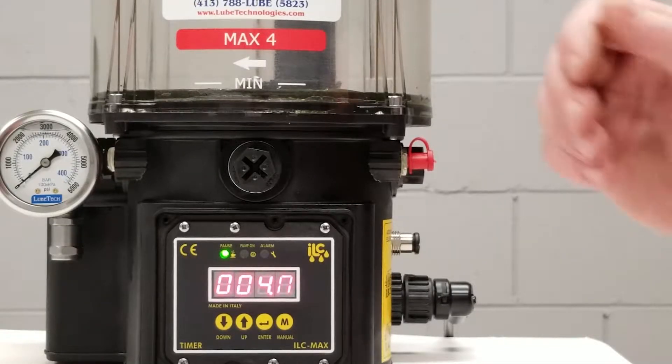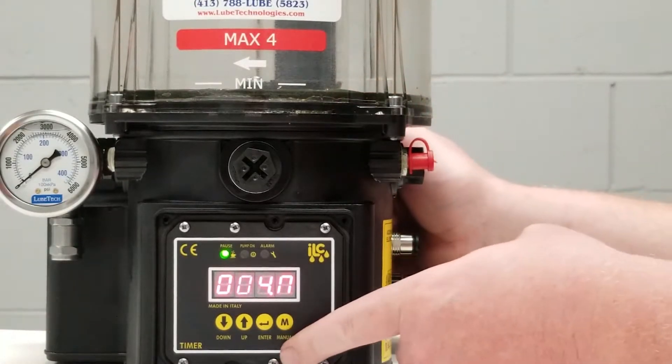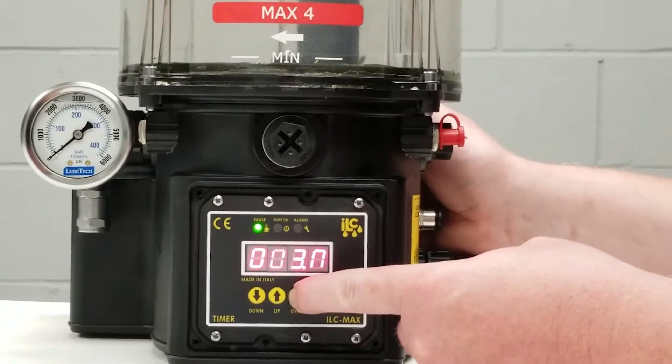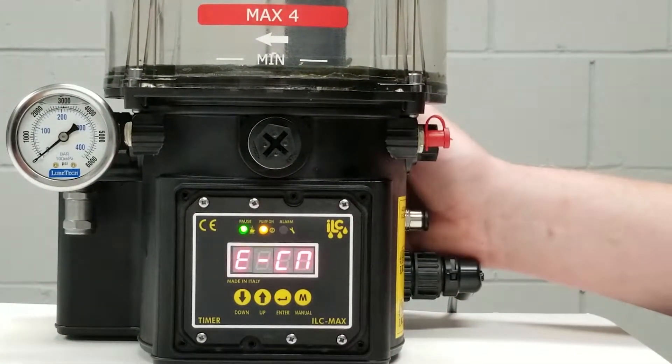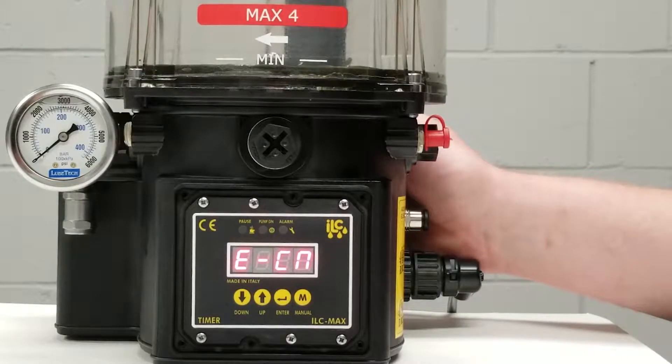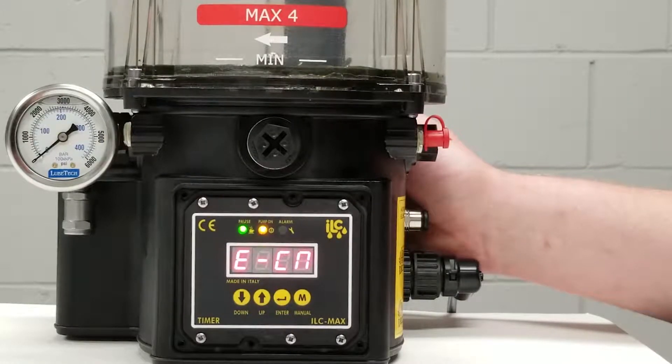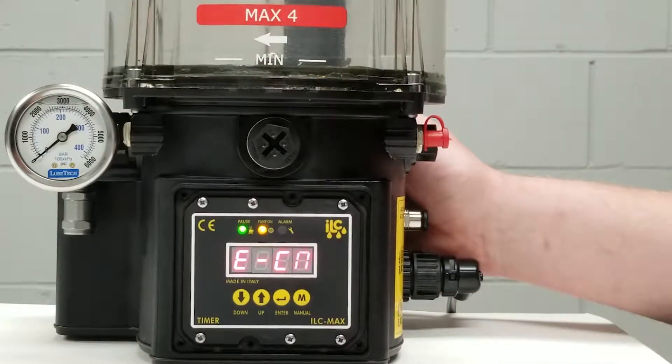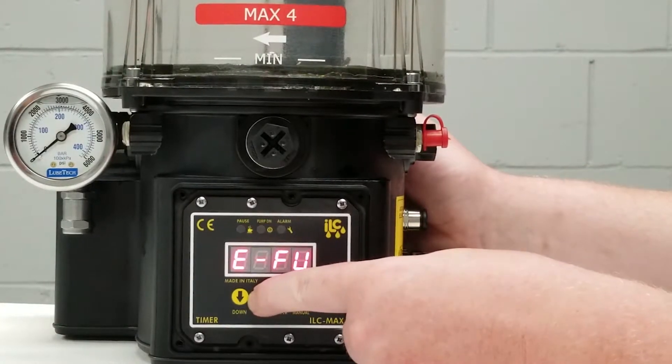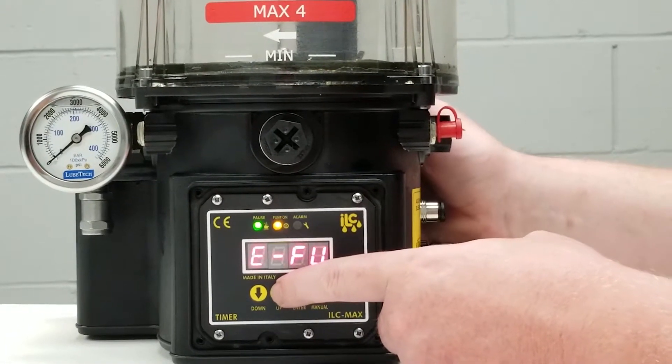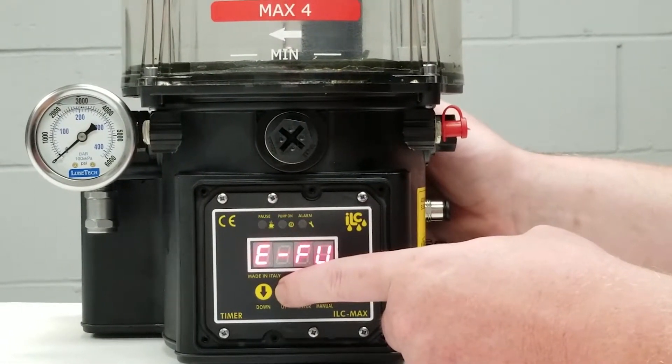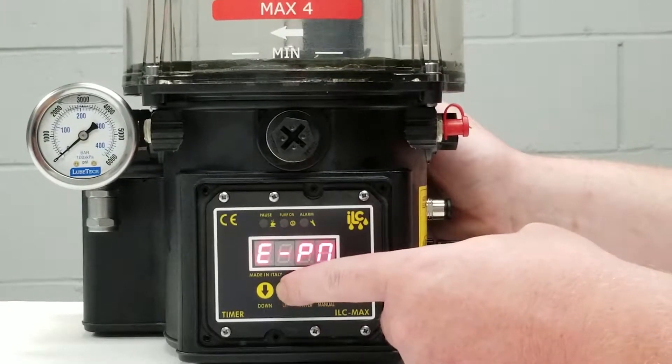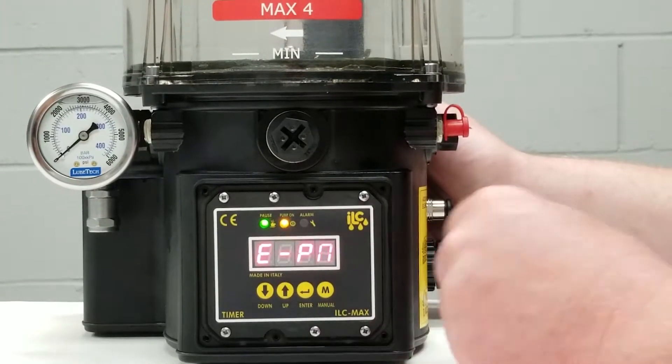So let's enter the programming mode. We do that by simply pressing and holding the enter key for approximately three seconds and that's going to take us to E-CN. From there I simply need to press the up button to go through my pump's pre-programmed status. E-FU just tells me that I'm going into the programming mode and your first parameter will be E-PN.